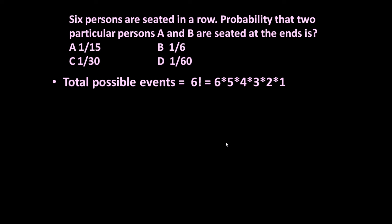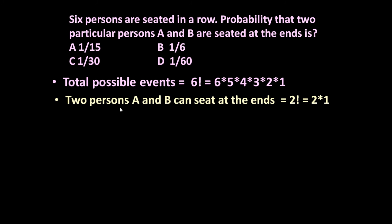Now let us see how many favorable events there are. What we want: 2 persons A and B must sit at the ends. A and B can sit at the ends in factorial 2 ways — A on the left side and B on the right side, or B on the left side and A on the right side. So factorial 2 means 2 × 1 = 2 ways.